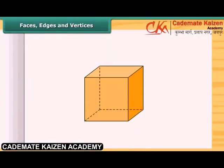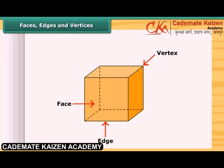Look at this cube. This is the face of a cube, this is the edge of the cube, and this is the vertex of the cube. An edge is a line segment where the faces meet, and the vertices are the points where the edges meet.